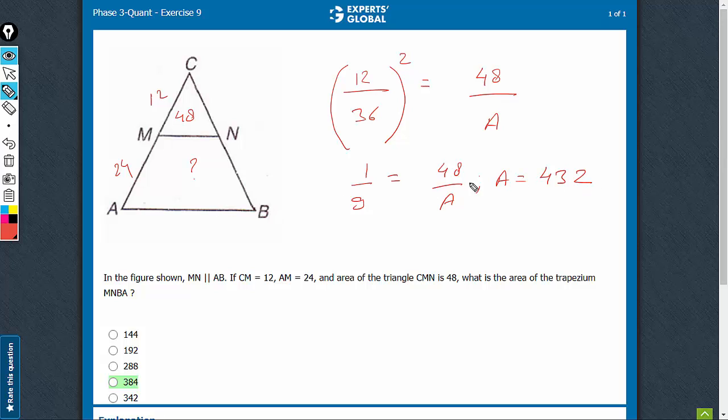However, that's not the answer. The answer is 432 minus 48. We need the area of only this part, 432 minus 48. That would be 384.